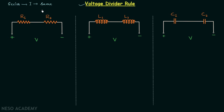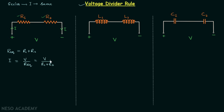Let us understand how to apply the voltage divider rule when we have resistors connected in series. Here we have two resistors connected in series: the resistance of the first resistor is R1, the resistance of the second resistor is R2, and the voltage across the combination is V. The current through both resistors is I. The equivalent resistance is R1 plus R2, therefore the total current I equals V divided by R1 plus R2.